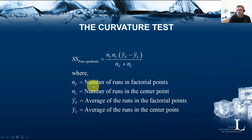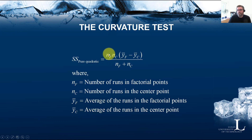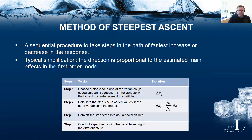In this curvature test, NF is the number of runs in the factorial portion of the design, NC is the number of runs in the center points, Y-bar F is the average of the factorial runs, and Y-bar C is the average of the center point runs. You then calculate the sum of squares of pure quadratic, which is also provided in the software. The method of steepest ascent is a sequential procedure to take steps along the path of fastest increase or decrease in the response, and the direction is proportional to the estimated main effects in the first order model.